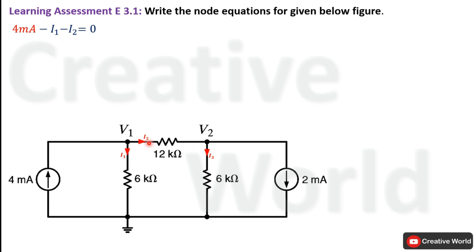Similarly, current I2 will be equal to the voltage across the 12 kΩ resistance divided by its value. Since the current is leaving from node V1 and entering towards node V2, V1 is at higher potential than V2. So the potential difference across the 12 kΩ resistance is V1 minus V2, and the current equation becomes (V1 − V2) divided by 12 kΩ.